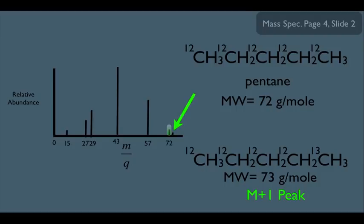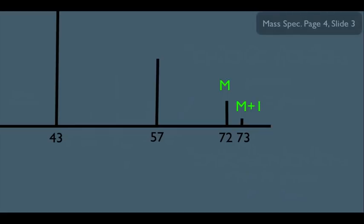You might wonder if a pentane molecule could have two carbon-13s. Remember, out of a sample of carbon, 98% is carbon-12 and only roughly 1.1% is carbon-13. So the chances of one pentane molecule having two carbon-13s are slim to nil, but there is a chance that one carbon could be carbon-13. That's why we get an M and an M-plus-1 peak.